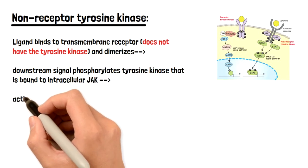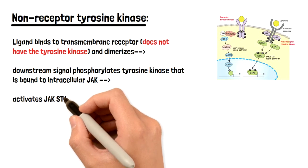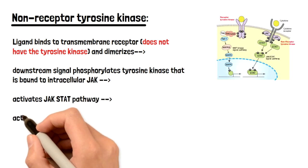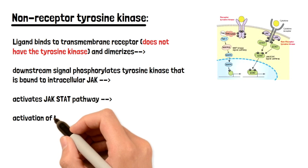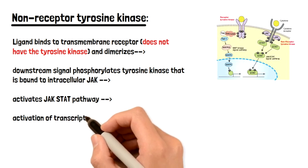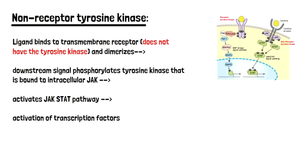So the key difference here is the receptor itself is not going to be phosphorylated, unlike the receptor tyrosine kinases which are phosphorylated. And this all happens intracellularly.